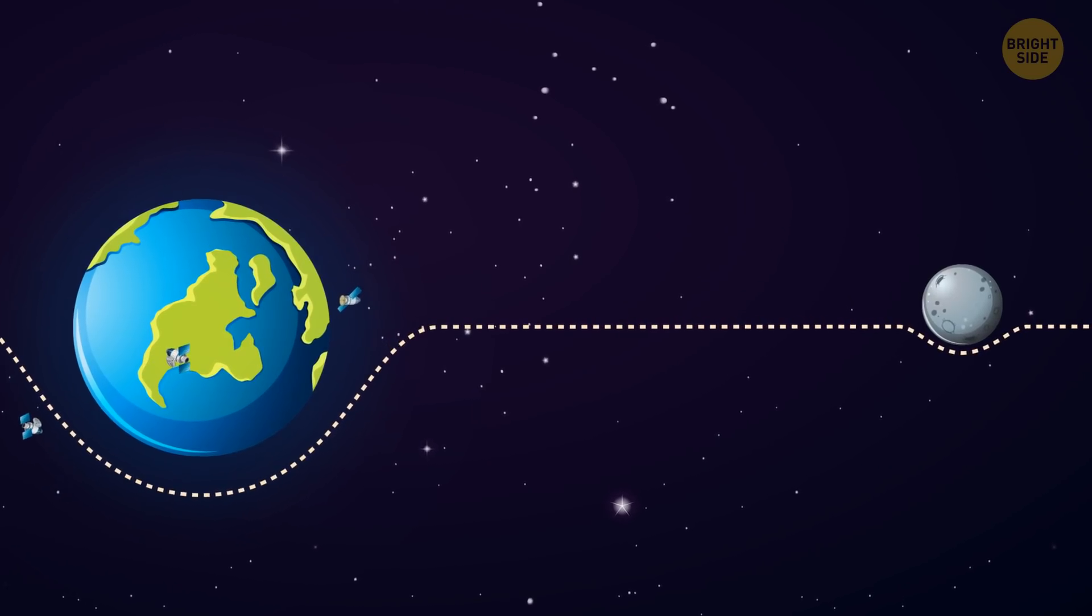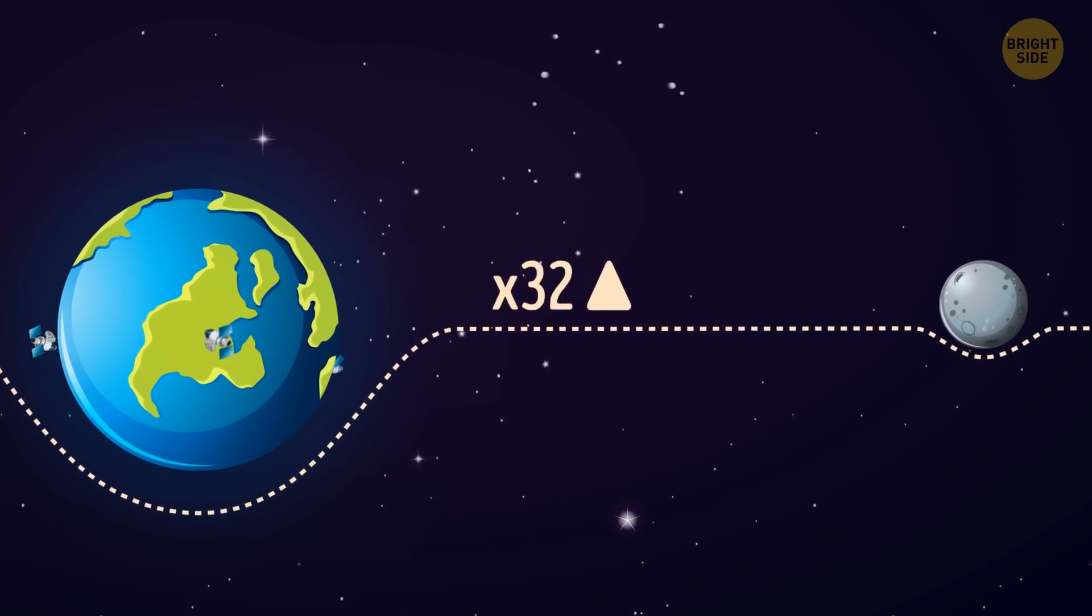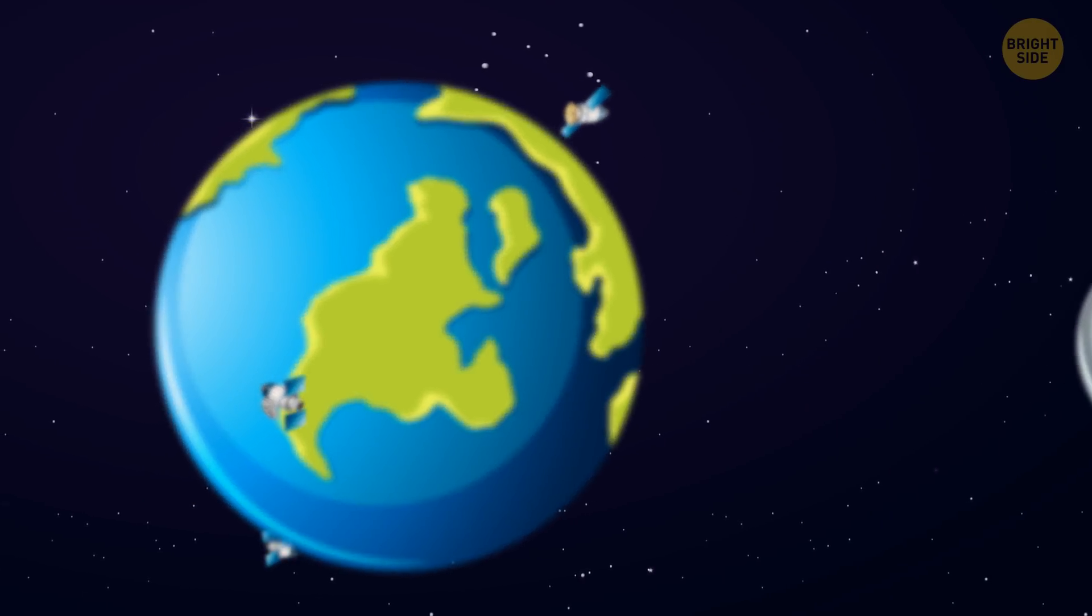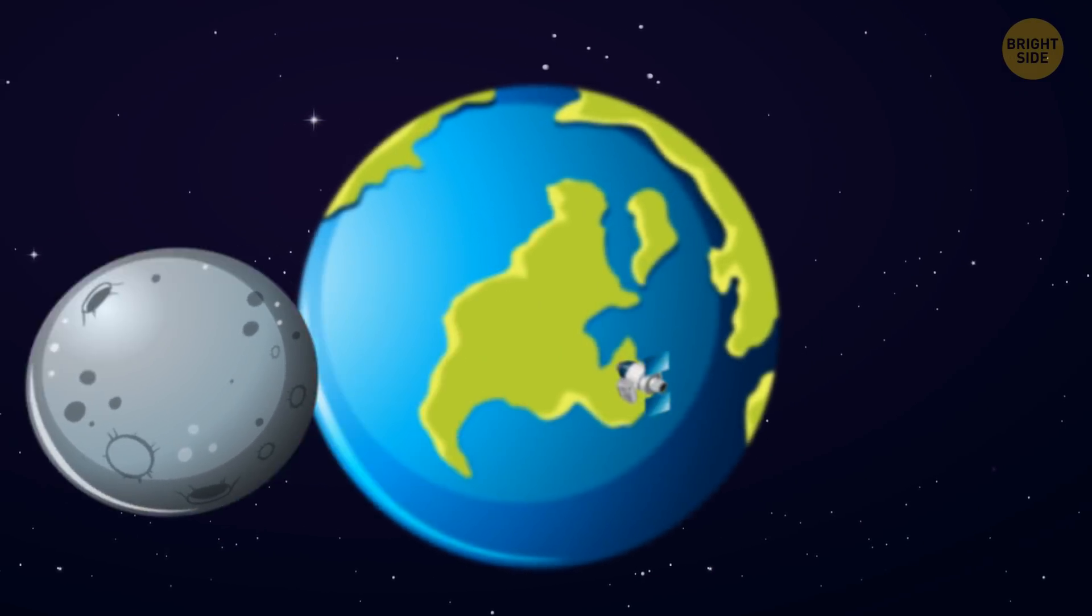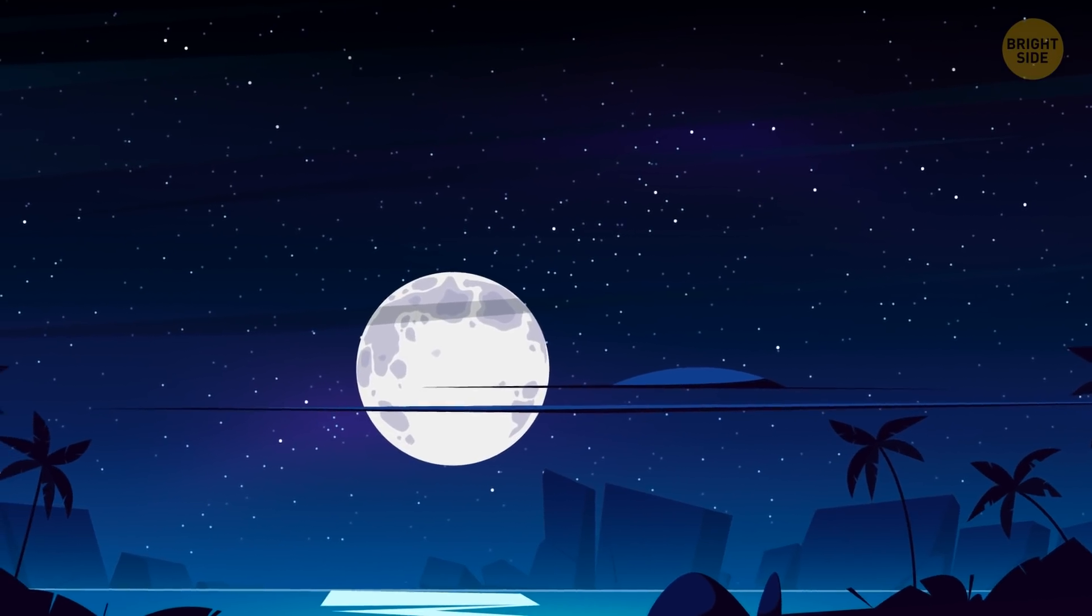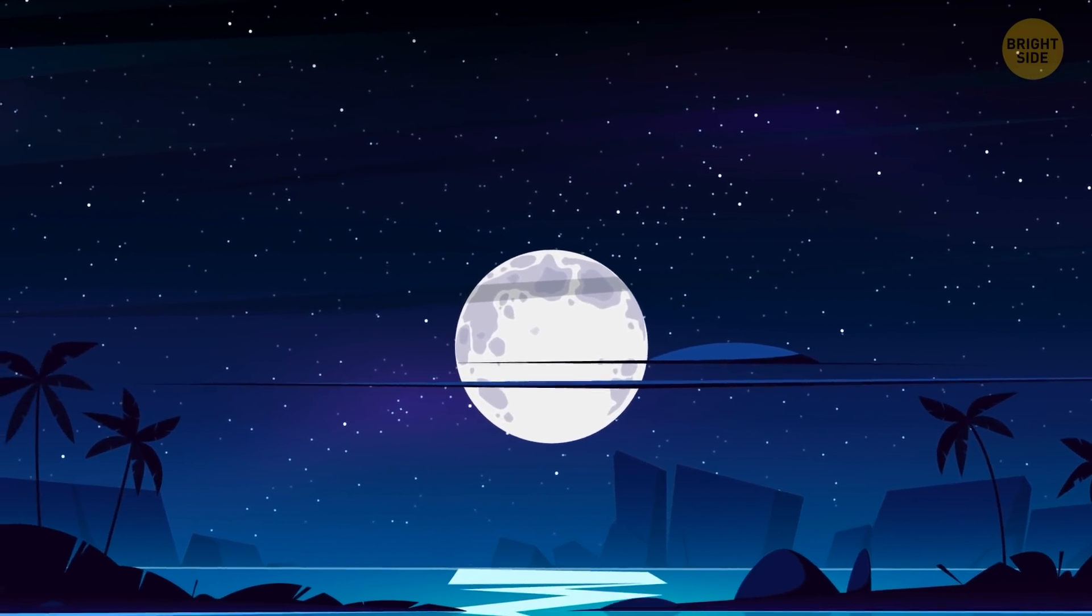While the Moon orbits the Earth, at one point, it may be as close to our planet as possible. Then, the force of the interaction will be greatest. At this point, tidal forces may force cracks in the surface of the Moon to open and release gas from its interior.